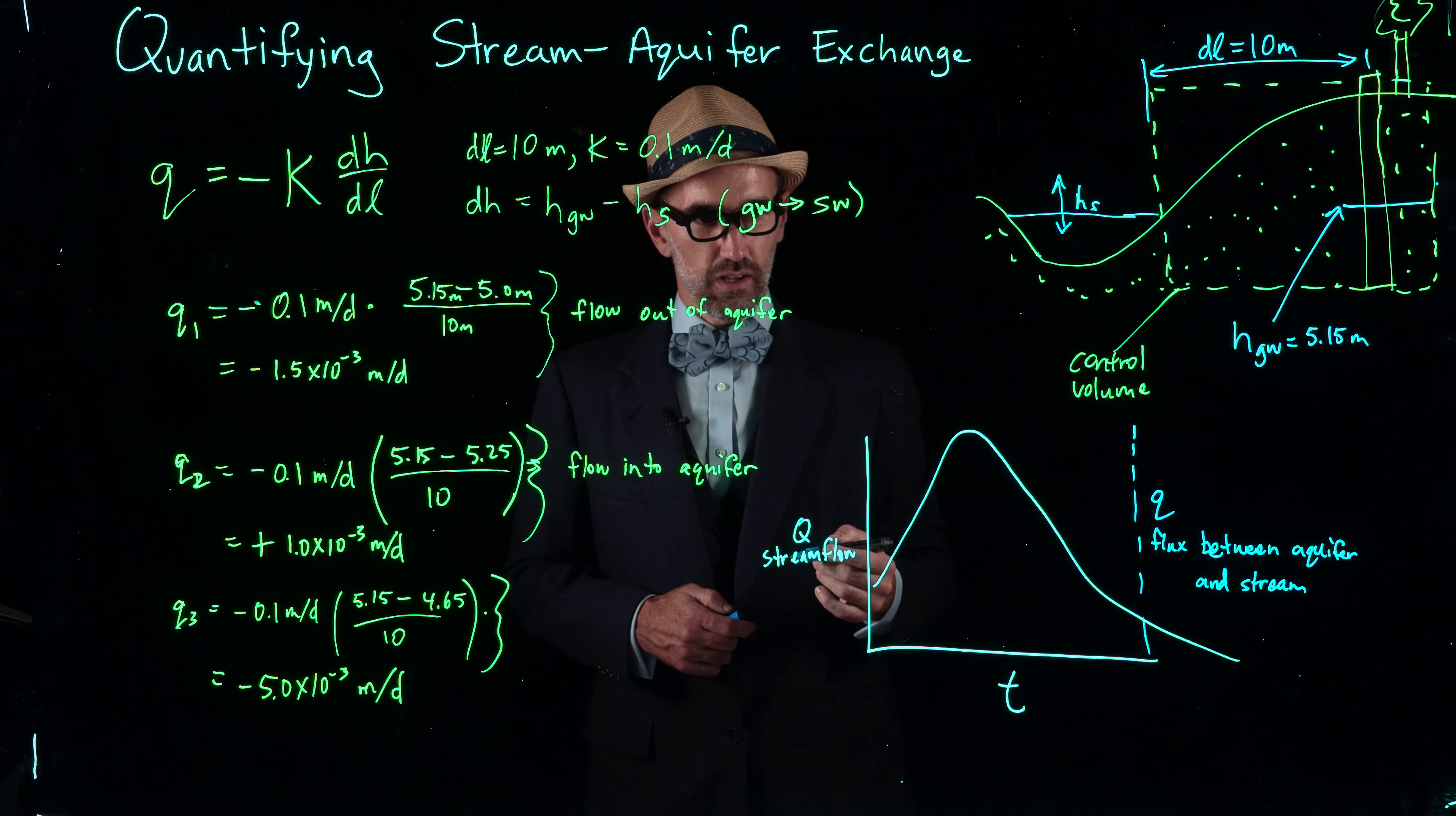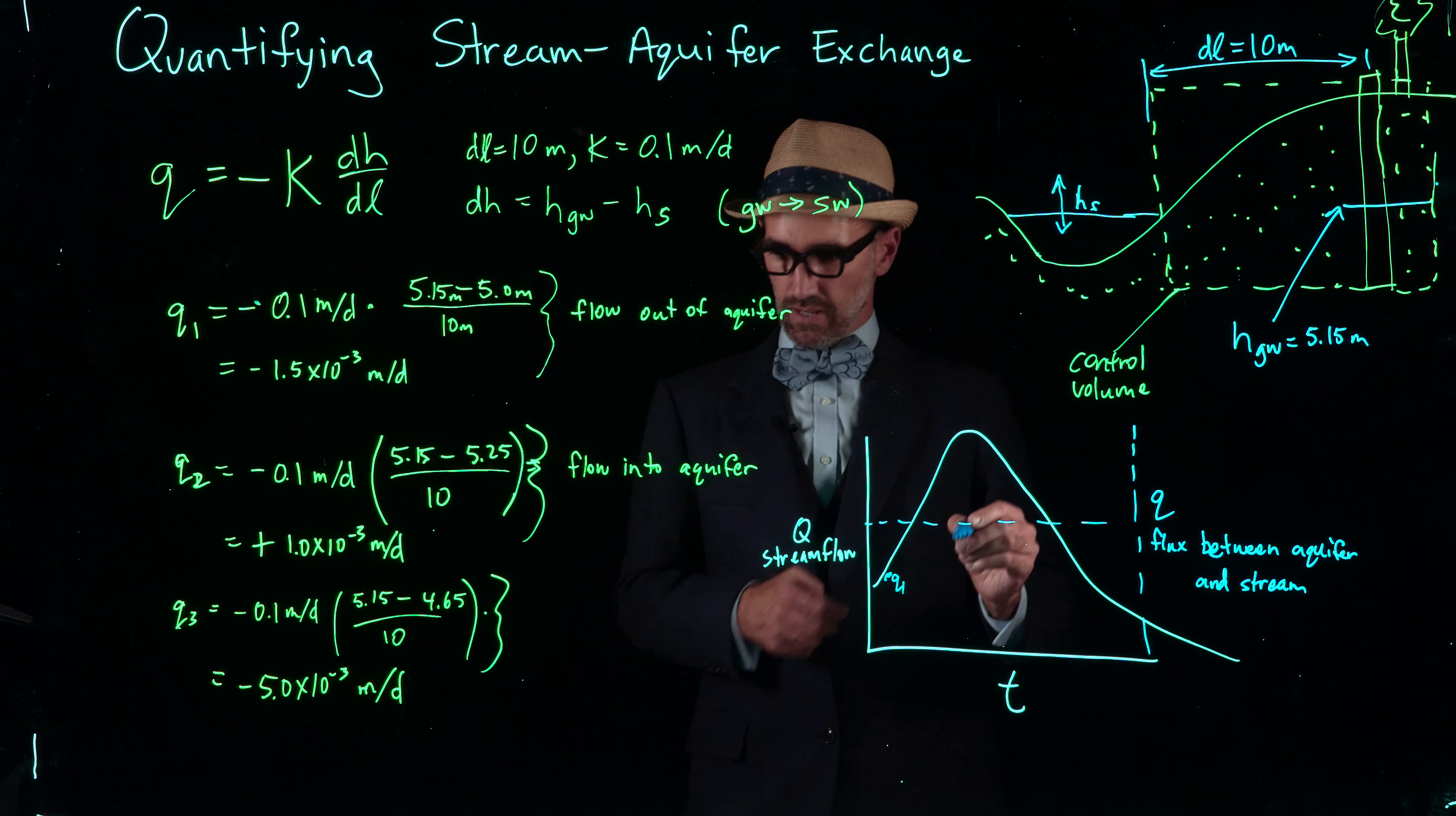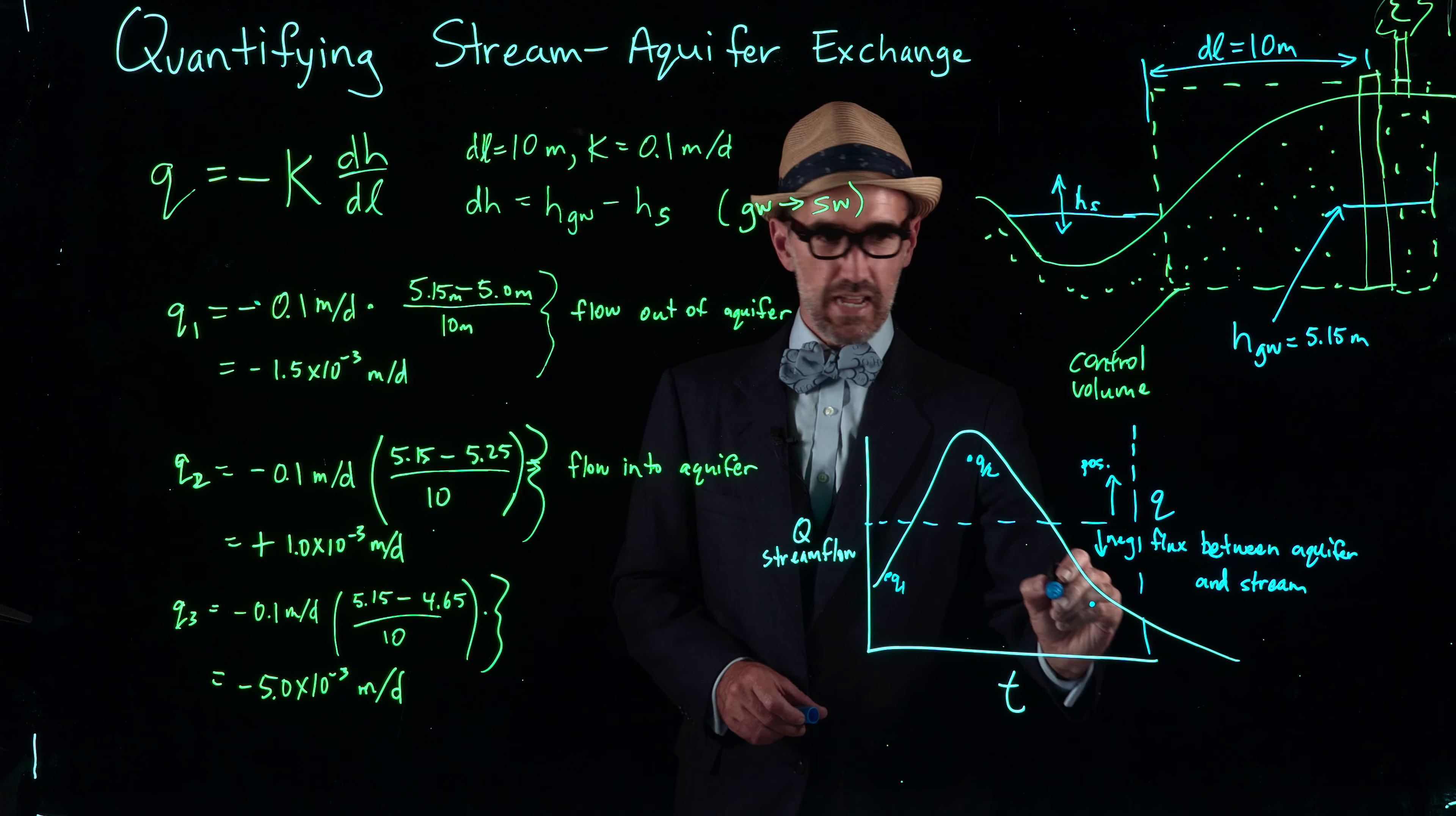Our flux is a function of whether the groundwater or surface water are higher. Early in the storm, the surface water is higher than the groundwater, and we have this q1 that is negative. At the peak we have a positive q2. Then after the storm we again have a negative q3.